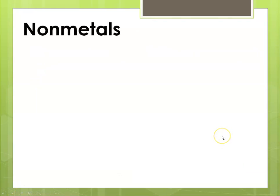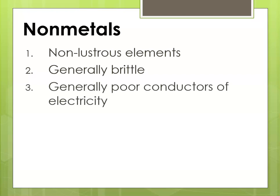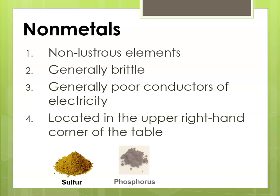Now we'll talk about nonmetals. In general, nonmetals are non-lustrous, that means they're not shiny. They're generally brittle, meaning if you hit them with a hammer, they turn to powder. They are generally poor conductors of electricity and heat as well. They're located in the upper right-hand corner of the periodic table. Here is what sulfur looks like, here is what phosphorus looks like, and here is what carbon looks like. You'll notice none of them are terribly shiny.